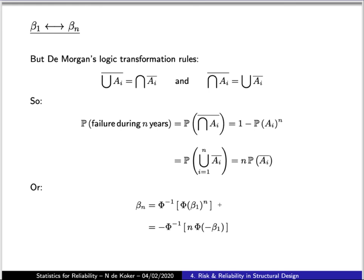Specifically the complement of an intersection of a set of events is equal to the union of the individual complements of those events. Using this relation we can then rewrite the event of failure during the lifetime of the structure as the equivalent event which is the union of failure events during every given year which then corresponds to a sum of reliabilities rather than a product.